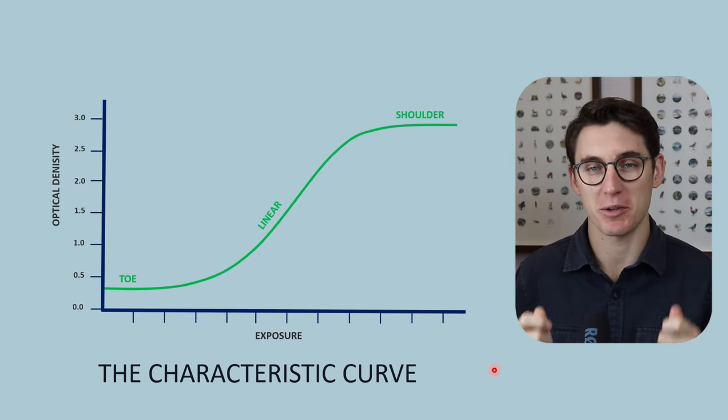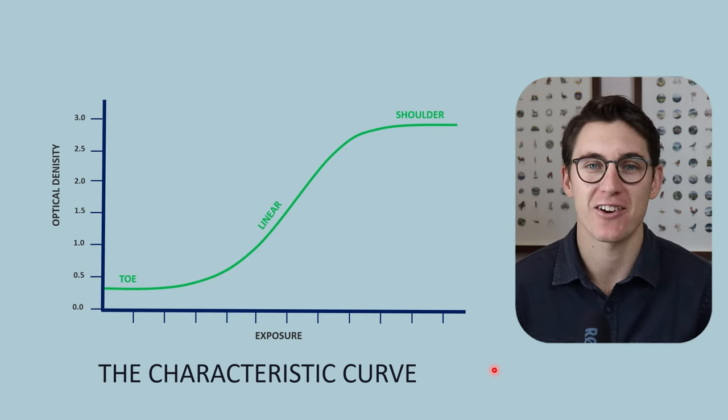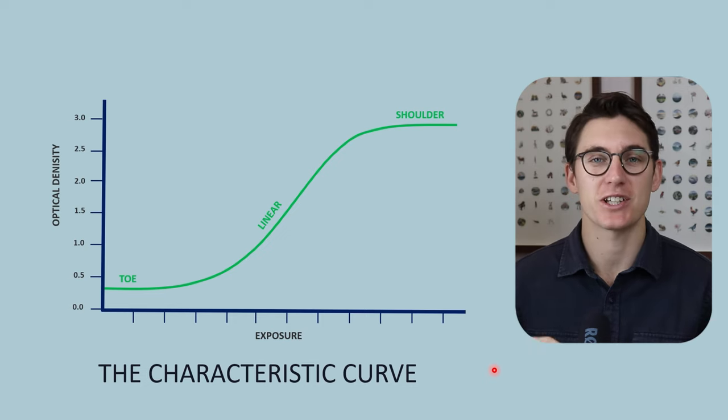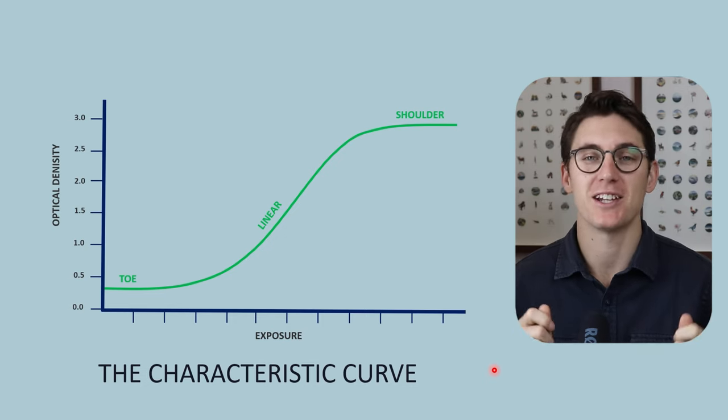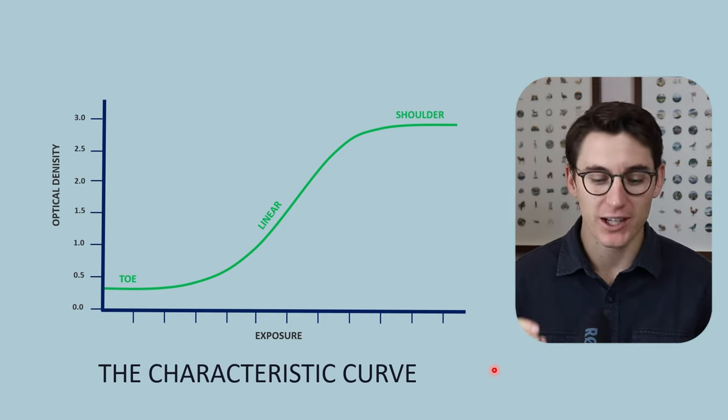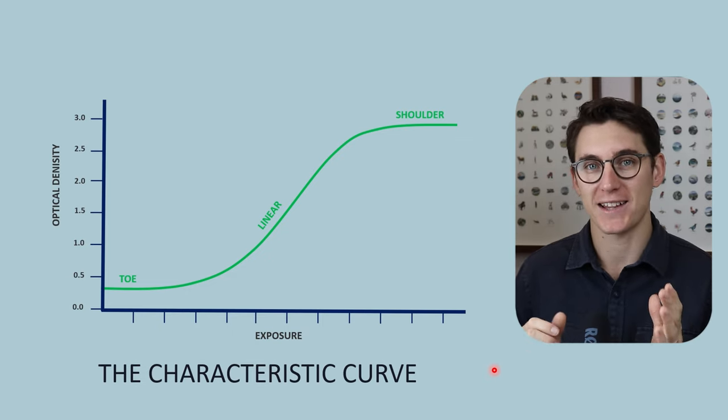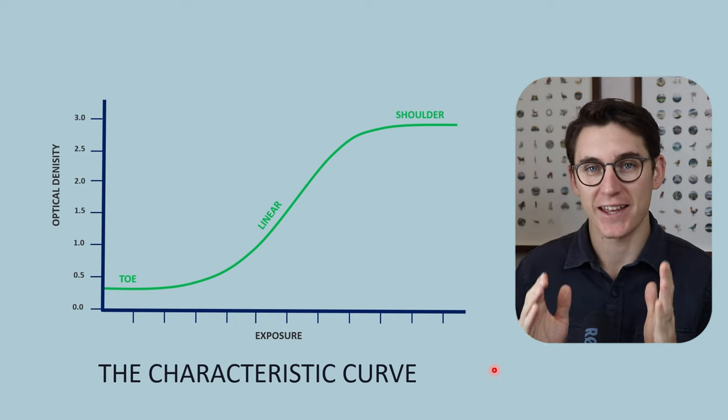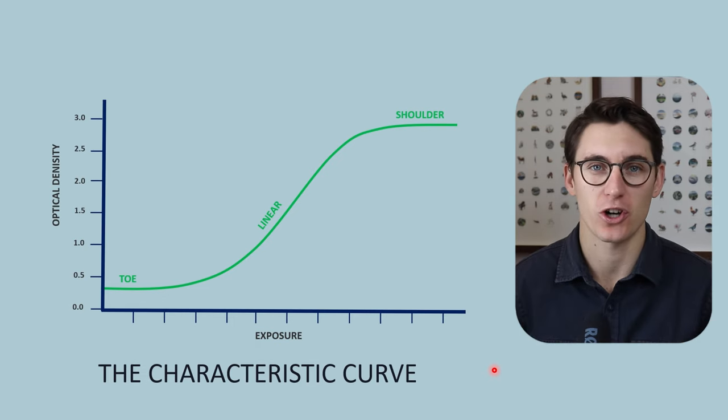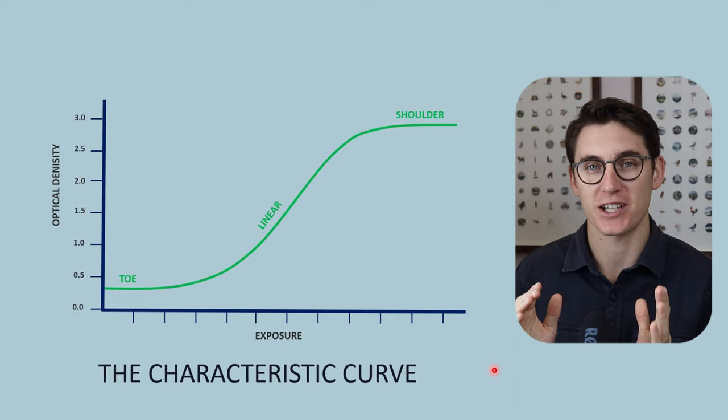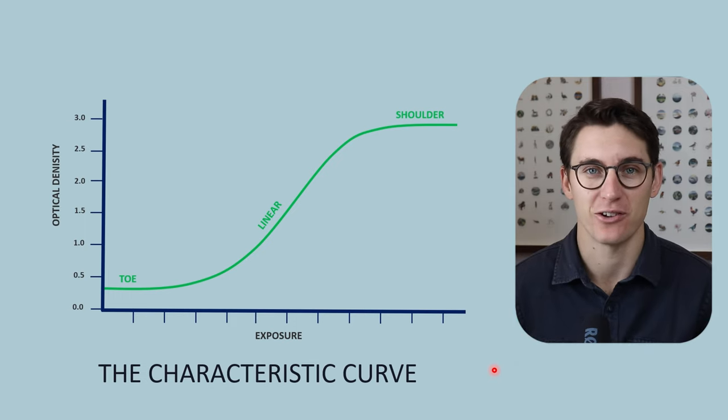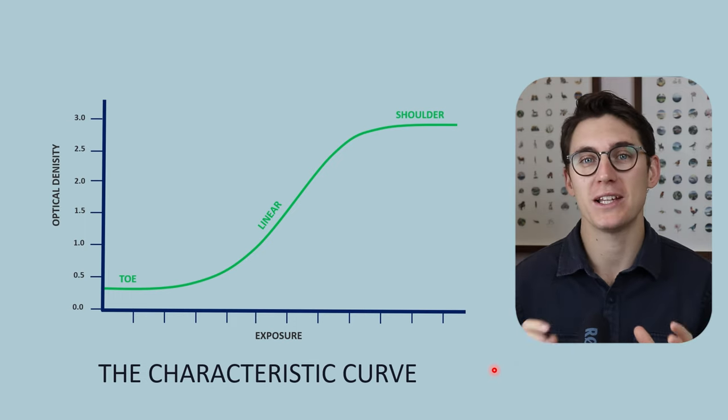And those properties can be mapped out on what is known as the characteristic curve. The characteristic curve is specific for the particular film that we take. Now don't get this confused with characteristic radiation. In characteristic radiation we were looking at the x-ray energies released that are specific to a specific target material. They are characteristic for the target material of the anode. Here we're dealing with something completely different.